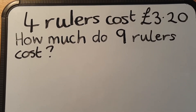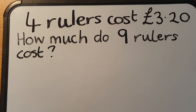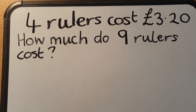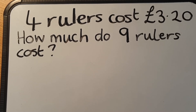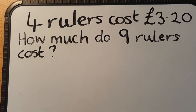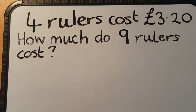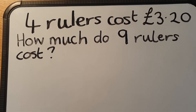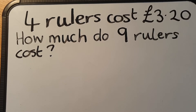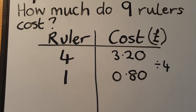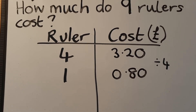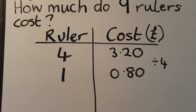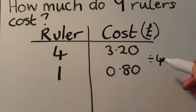In this example we know that the cost of four rulers is three pounds twenty, and we're trying to figure out how much it would cost for nine rulers. So before we can do that we're going to have to figure out the cost of one ruler first. If you know the cost of four rulers, we would just divide that cost by four. I've set up a table: four rulers cost three pounds twenty, and one ruler would cost three pounds twenty divided by four.